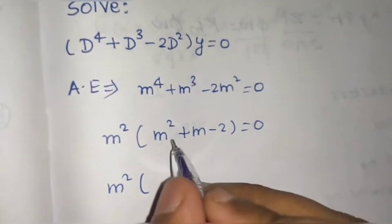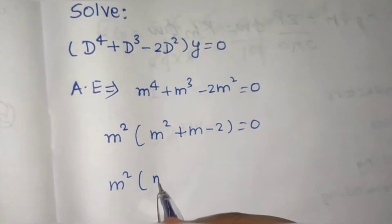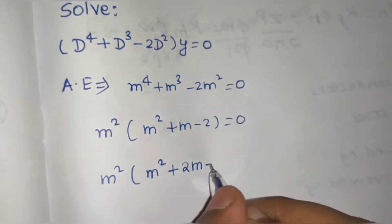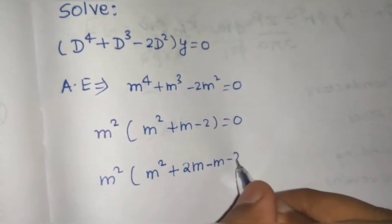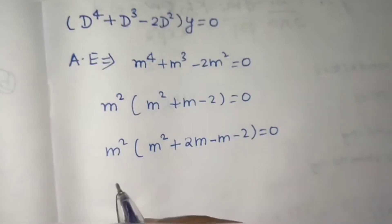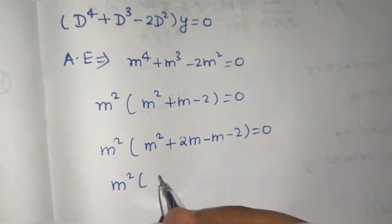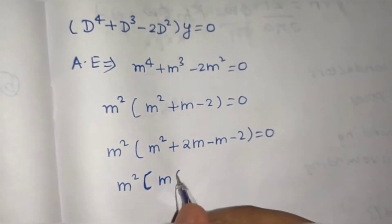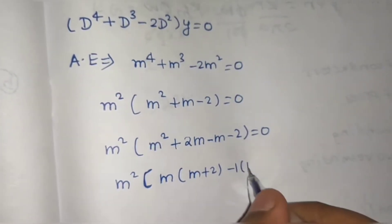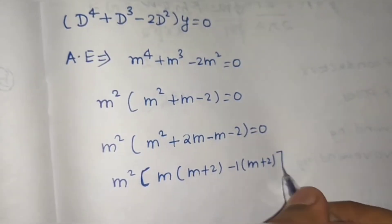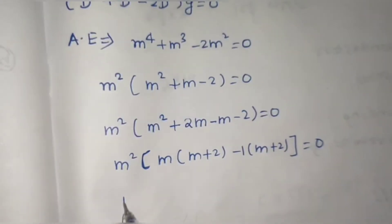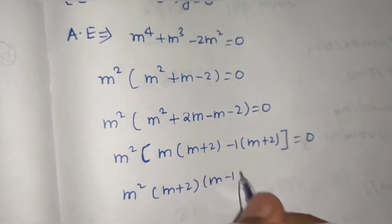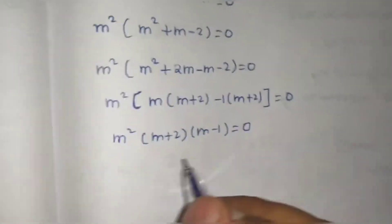We can further factorize m² + m - 2 as m² + 2m - m - 2, which gives m(m + 2) - 1(m + 2) = 0. So the equation becomes m²(m + 2)(m - 1) = 0.